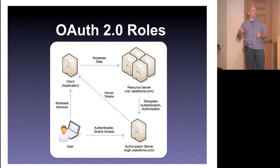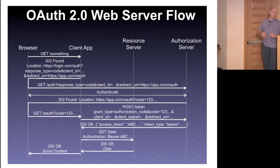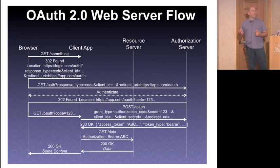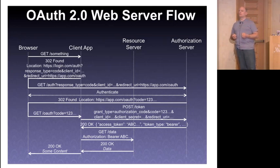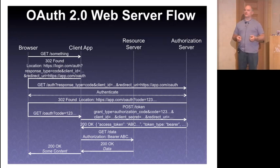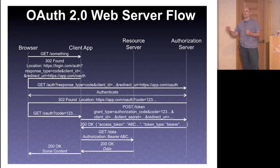Let me run through the OAuth flow. Imagine a client application — a photo printing app — that needs to access photos at Yahoo. The user sends some request to the client app, and to satisfy that request the client app needs access to those pictures. The client app thinks: I need data from the resource server but I have no token for this user right now. So I'm going to redirect the browser — a standard 302 — to the authorization server.